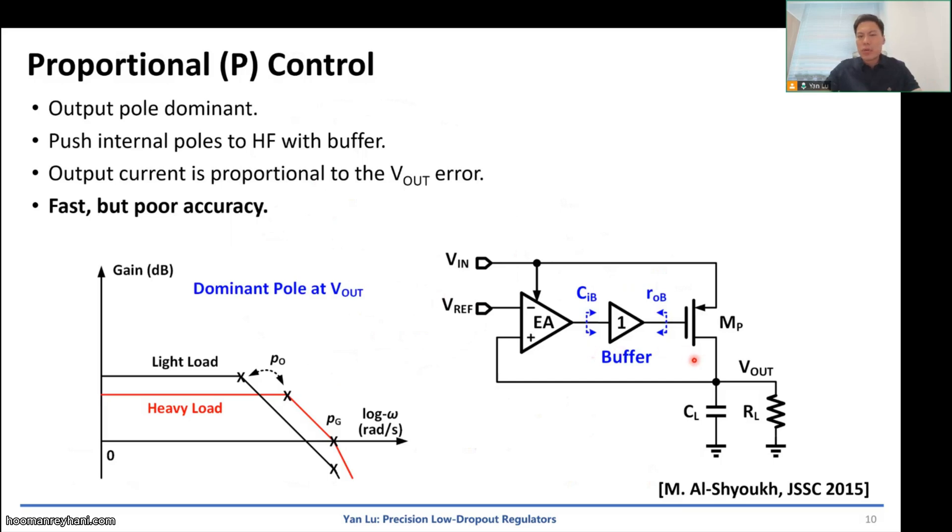And let's relate the PID theory to the circuit techniques. If we use, like what we mentioned just now, design the dominant pole at outputs and use the buffer to split the internal low-frequency poles into high-frequency poles, we don't want low-frequency poles in the loop. So this will be a high-bandwidth loop. It will be fast. But it will have poor accuracy because for the P control, it depends on the error to generate the output current. So for certain output currents, we have to use error. So it will result in poor accuracy. That's the fundamental limit for P control.